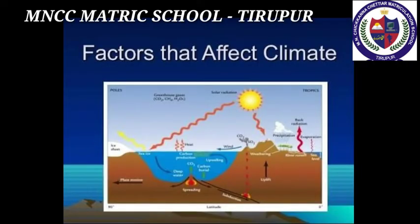Factors of weather and climate: angle of the sun rays, the length of daytime, altitude, distribution of land and water bodies, location and direction of mountain ranges, air pressure, winds and ocean currents are the major factors which affect the weather and climate of a region.